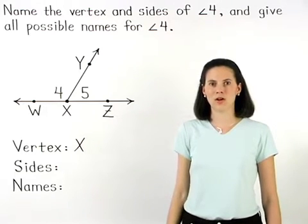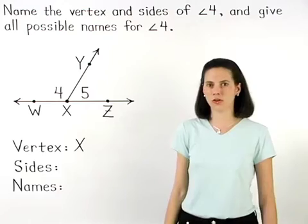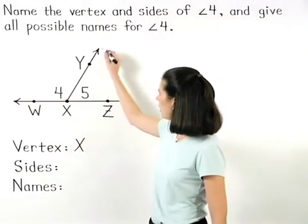The sides of the angle are the two rays that form the angle, which we've just shown are rays XW and XY.